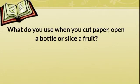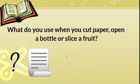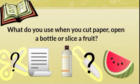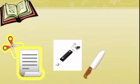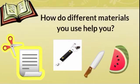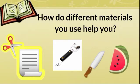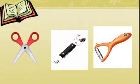What do you use when you cut paper, open a bottle, or slice a fruit? You use scissors in cutting paper, a bottle opener, and also a knife in slicing a fruit. Those materials can make things easier for you. Those things that you are going to do may be much lighter when you use those materials.